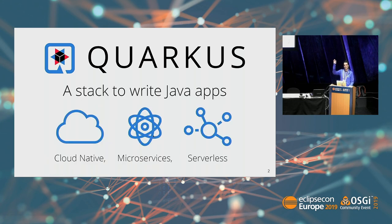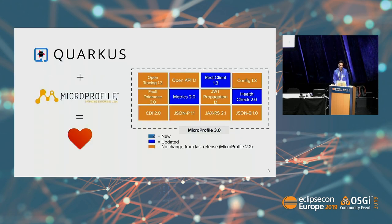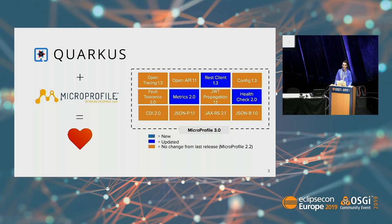Quarkus is a cloud-native stack for writing microservices and serverless apps. And Quarkus loves MicroProfile. Quarkus is based essentially on Eclipse MicroProfile. So we use MicroProfile as the base model, on top of which anything else plugs in onto Quarkus. We use CDI, and we implement MicroProfile version 3. We're just passing the last bits of the TCK.